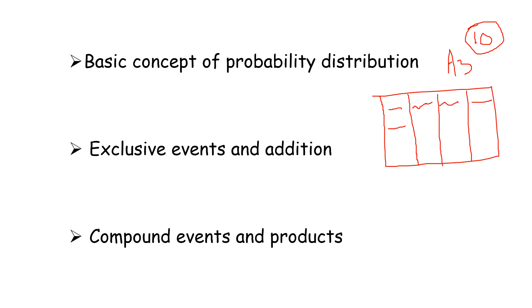The probability of an event must be between 0 and 1. The probability of an impossible event is always 0. The probability of a sure or definite event is always 1.